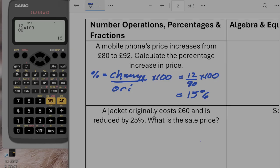A jacket originally cost £60 and it was reduced by 25%. What is the sale price? So the jacket originally cost £60. So 60 multiplied by 25% reduction is 0.75 as a multiplier. So 60 times by 0.75 is going to give us £45. So the sale price would be £45.